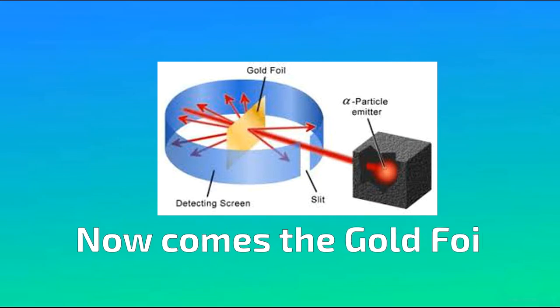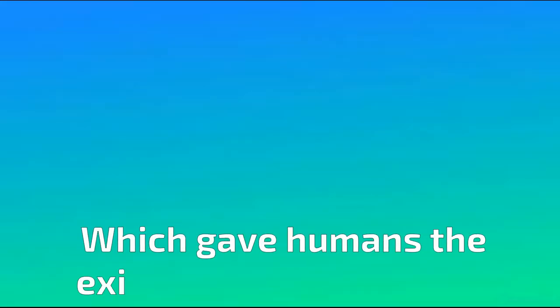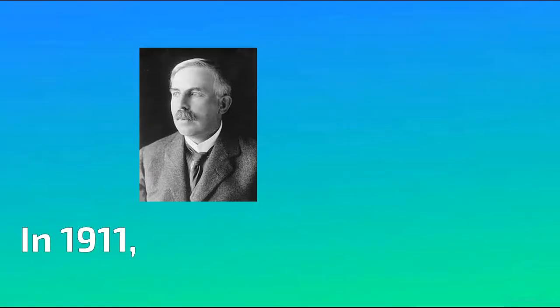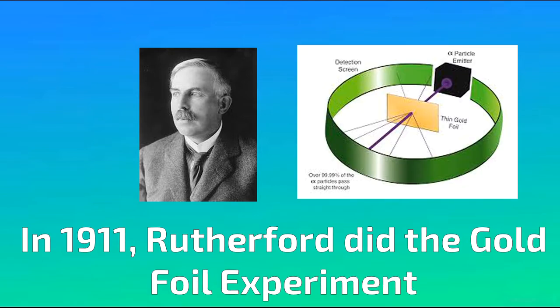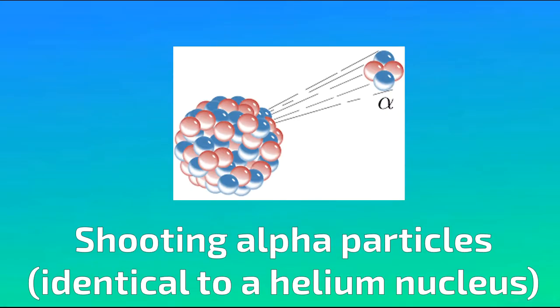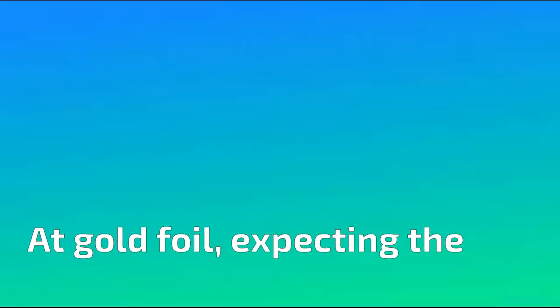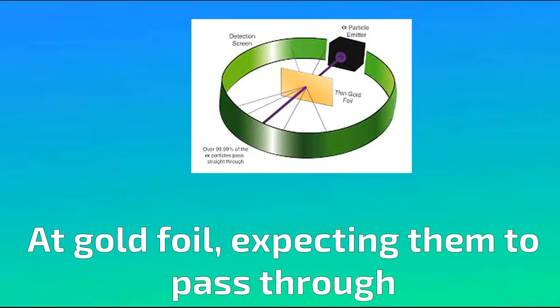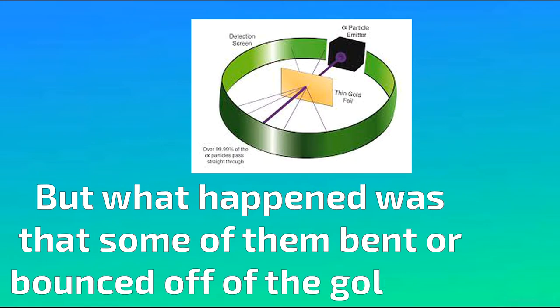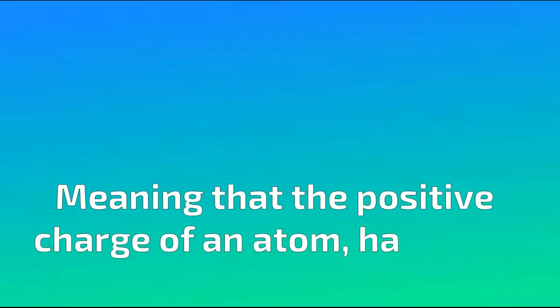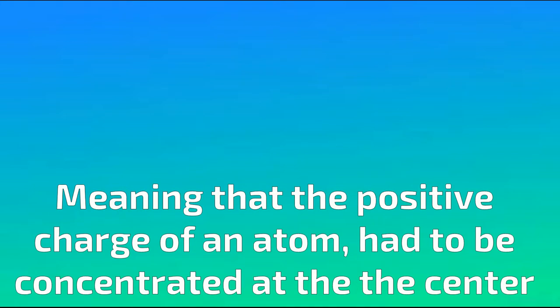Now comes the gold foil experiment, which gave humans the existence of the nucleus. In 1911, Rutherford did the gold foil experiment, shooting alpha particles, identical to a helium nucleus, at gold foil, expecting them to pass through. But what happened was that some of them bounced or bent off of the gold foil, meaning that the positive charge of an atom had to be concentrated at the center.